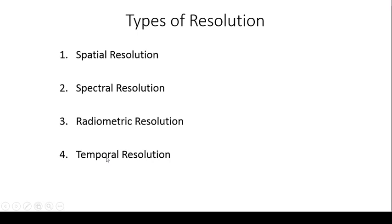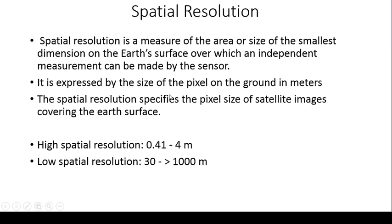Accordingly, resolutions have four different types: spatial resolution, spectral resolution, radiometric resolution, and temporal resolution, each with its own different characteristics. Spatial resolution is the measure of the area or size of the smallest dimension on the earth's surface over which an independent measurement can be made by the sensor. It can be used to measure the smallest objects with different pixel sizes. Spatial resolution is expressed only by the size of the pixel.